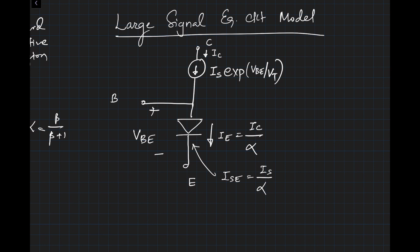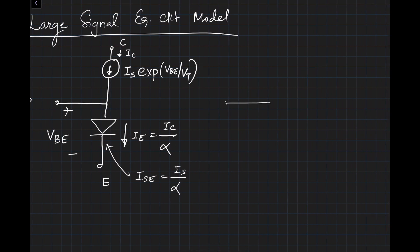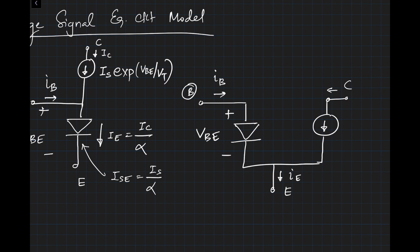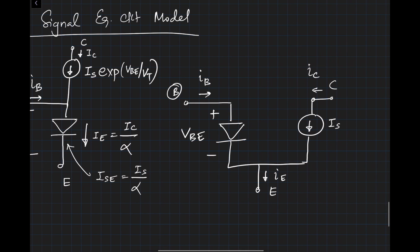We can also write this model slightly differently. In this version, we draw base, collector, and emitter nodes with a diode and a current source. The base current IB flows in, VBE is across the base-emitter diode, IE flows through the emitter, and IC flows into the collector. IC = IS · exp(VBE / VT), and for the base-emitter junction diode the saturation current is IS / β. This is your large signal equivalent circuit model.